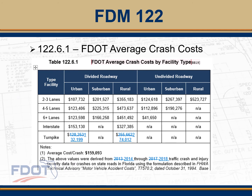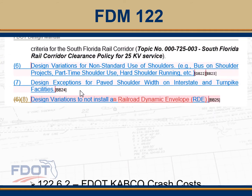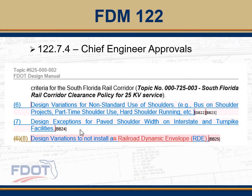Additionally, we updated the average crash cost to include turnpike facilities, as their numbers are slightly different from those for arterials, interstates, or other department roadways. We also updated to include the 2014 to 2018 completed crash forms by the State Safety Office. Up until now, the completed crashes from the CAR database ran from 2013 to 2017, so we've updated the comprehensive crash costs for fatals, injuries, moderate injuries, minor injuries, and property damage only. These are minor updates done every year, and these numbers should be used for the benefit-cost of any design variation, exception, or safety analysis done on a project.